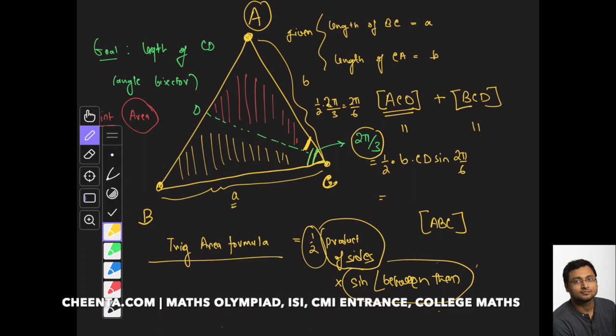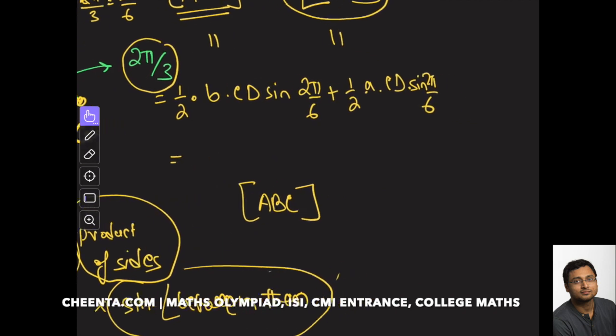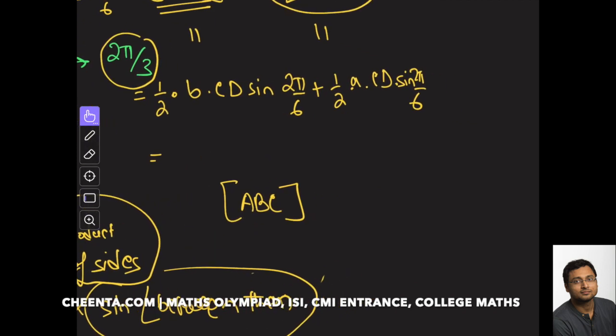Similarly, BCD - the area of BCD is half of small a times CD times sine of 2π by 6. Maybe I can zoom in here a little bit. The area of ABC is half of b times a times sine of 2π by 3.